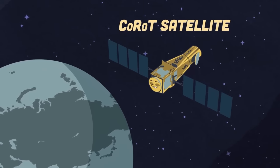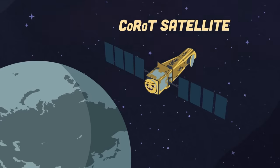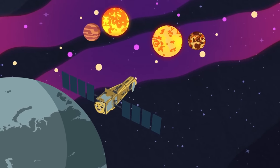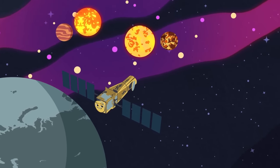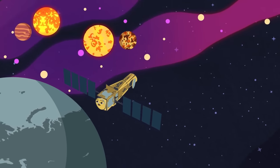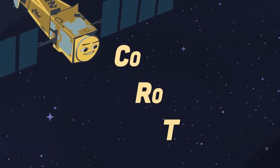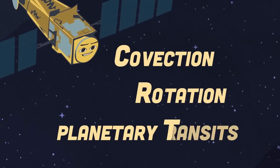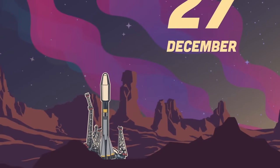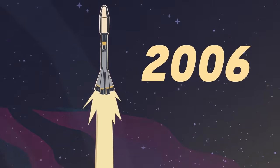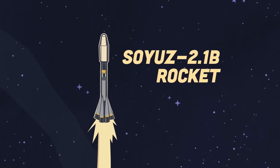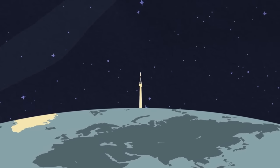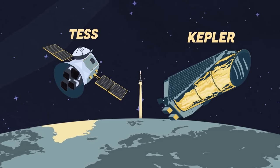On the CARO satellite, my mission was a delight. I was set out to find rocky planets outside the solar system. I found extrasolar planets with short orbital periods, mostly those of large terrestrial size. CARO when broken down means convection, rotation, and planetary transit. I was launched on December 27th, 2006 atop the Soyuz 2.1b rocket. I opened the way for more advanced probes such as Kepler and TESS.